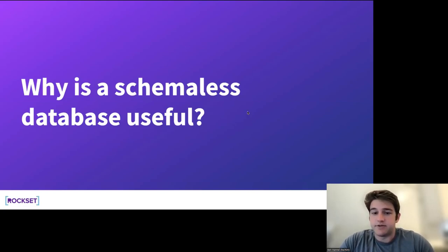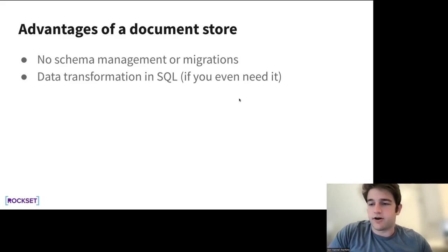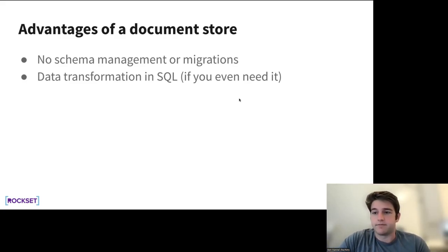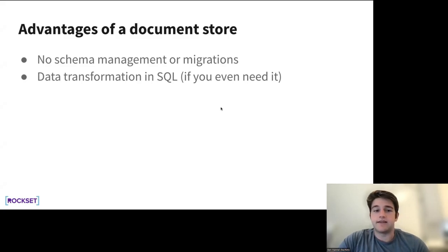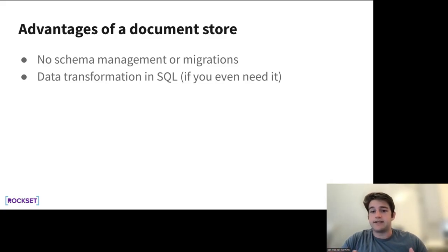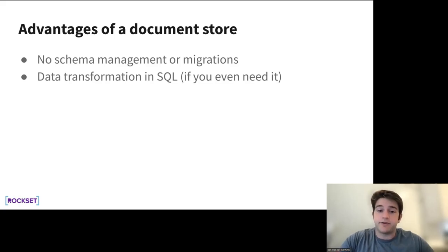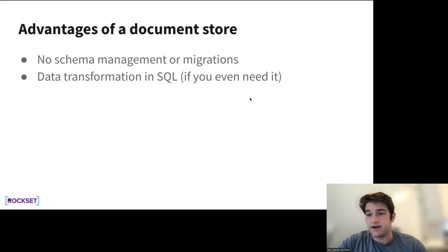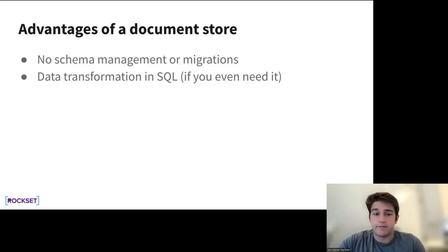Before diving into how we build a schema-less database, I want to explain why it's useful. There are traditional arguments from document store builders like MongoDB and DynamoDB — you don't have to manage a schema, and adding columns is easy when your application needs change. If you have a pipeline to get data into a traditional relational database, you need an ETL pipeline first. With a more flexible database, you can do that transformation in SQL, or skip it entirely. Rockset is often sufficiently performant that you can take data as-is with whatever denormalization or nesting, and run queries directly.